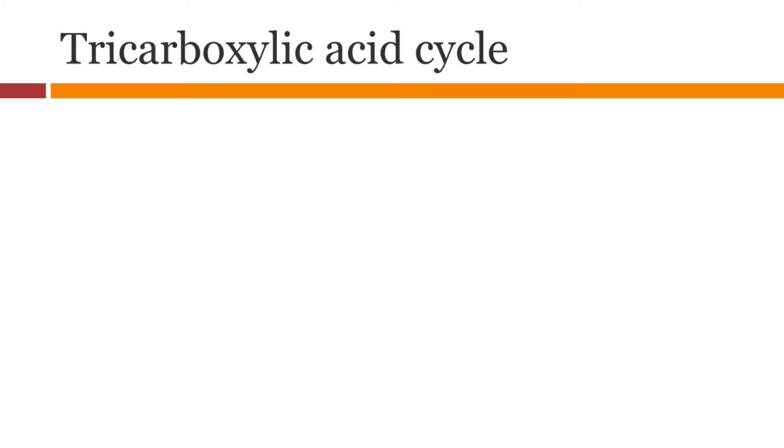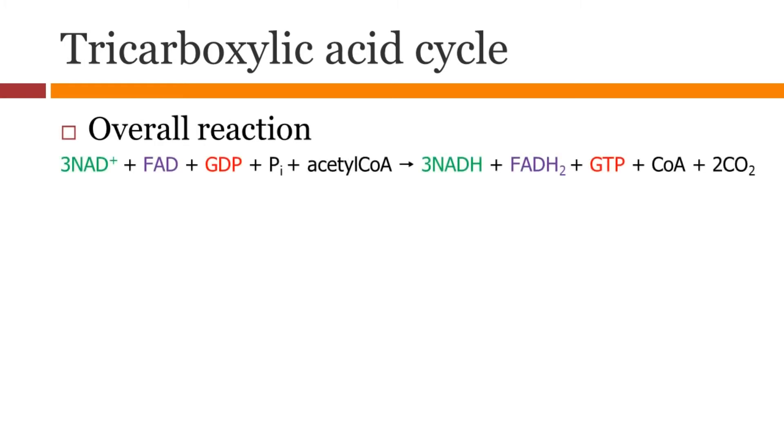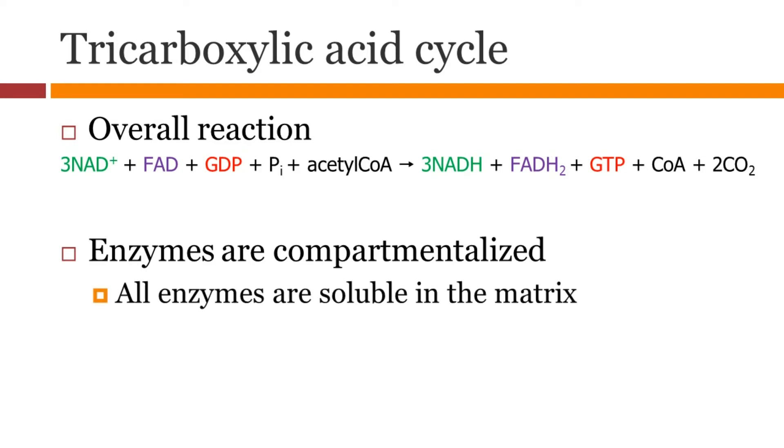Tricarboxylic acid cycle or TCA cycle. It's known by many other names. Here is the overall reaction. It produces 3 NADH, 1 FADH2, and a GTP molecule. The enzymes involved in the cycle are compartmentalized and they are soluble in the matrix, except succinate dehydrogenase.